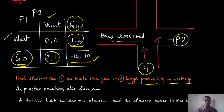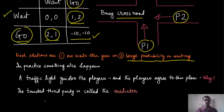In practice, there is a device called the traffic light, or the traffic police. This individual or device guides the players, and the players agree to follow the plan given. If the traffic police says car one stop and car two go, both players have an incentive to follow that instruction — and we will discuss formally why that is true in this module.